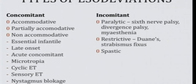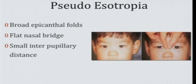Other forms include late onset esotropia, acute concomitant, microtropias, cyclic esotropia, sensory esotropia, and nystagmus blockage syndromes. Incomitant deviations can be paralytic — 6th nerve palsy, divergence palsy, or myasthenia gravis — or restrictive, such as Duane retraction syndrome and strabismus fixus. When you see a patient with isodeviation, it may not be true strabismus — keep in mind it could be pseudoesotropia, seen in a child with a flat nasal bridge, broad epicanthal folds, and small interpupillary distance.